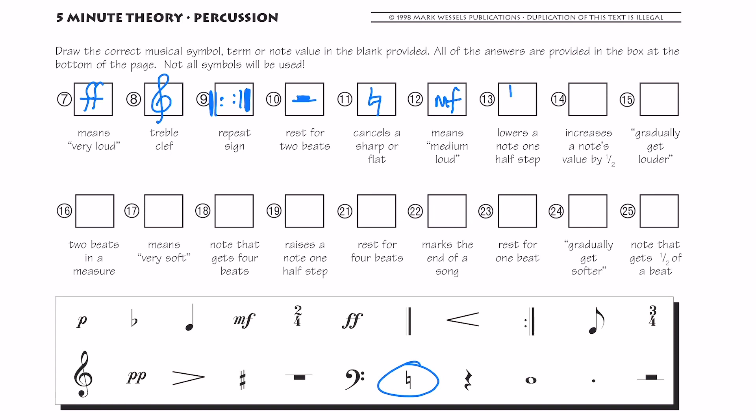What lowers a note one half step? Call that a flat sign. What increases a notes value by half? So if I put a dot behind a note, it increases its value. Gradually get louder. I can draw my greater than sign or I could write in a crescendo. Okay. Right now I'm just doing the symbols. So you write in the greater than sign. Two beats in a measure. What gets two beats in a measure? Oh, if I look down here, two, four time. That's a time signature.